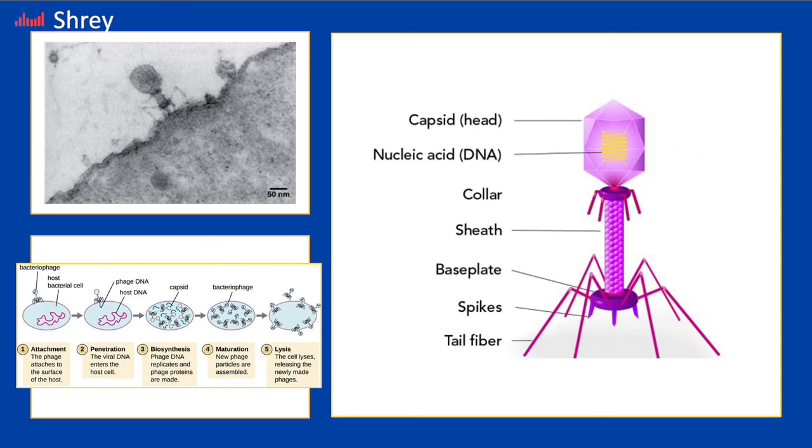When bacteriophages find their prey, they connect their tail fibers to receptors on the bacteria surface and inject their genetic material into the cell. New bacteriophages are made using the bacteria through the lytic cycle. Once the bacteria are full of bacteriophages, they lyse and die, releasing hundreds of new bacteriophages that repeat the cycle.